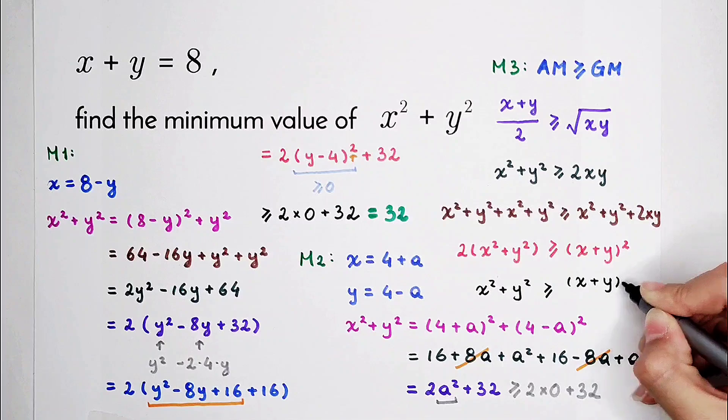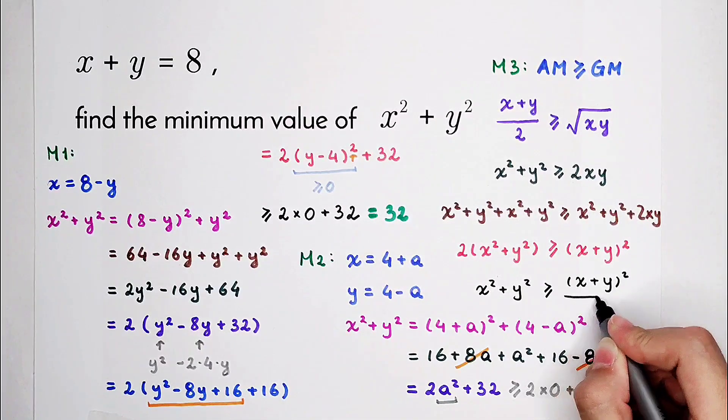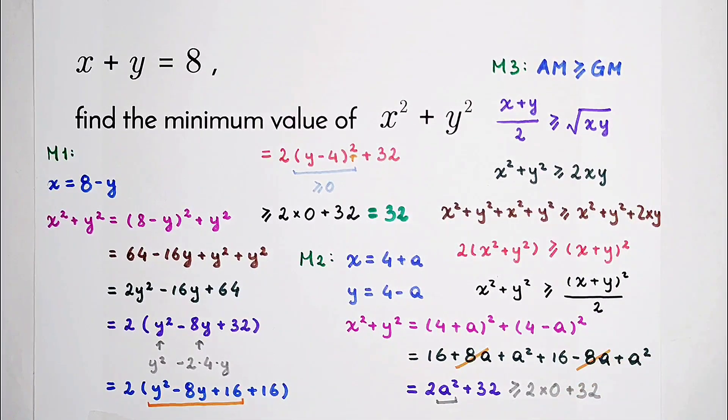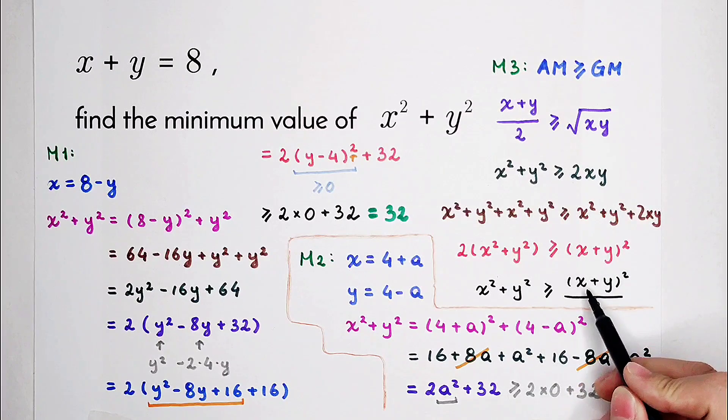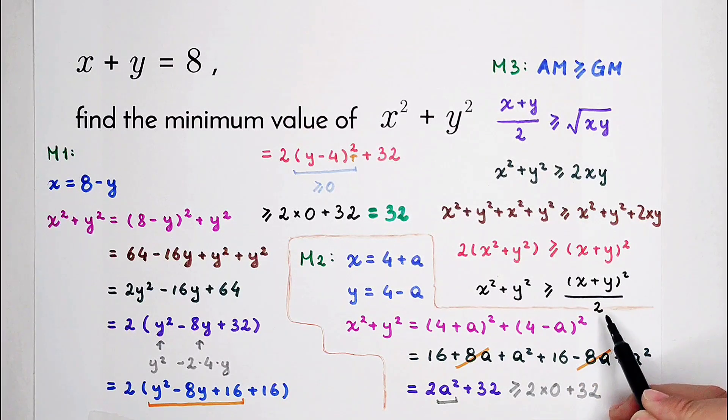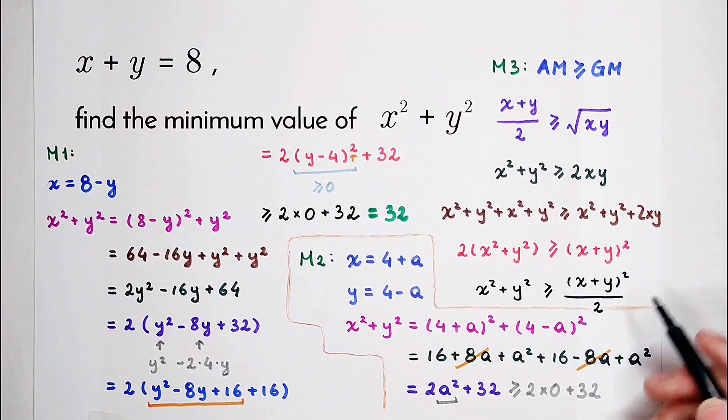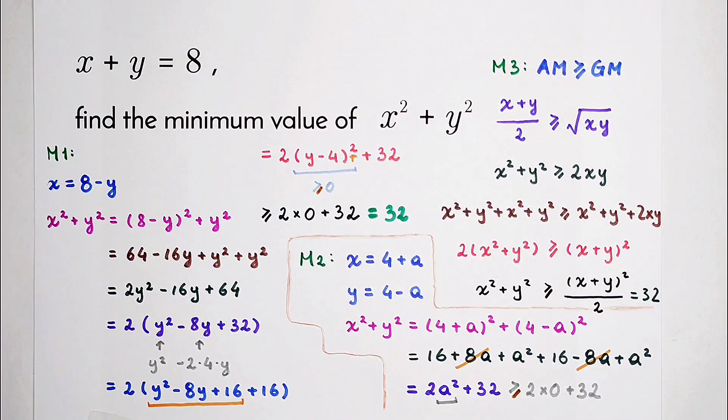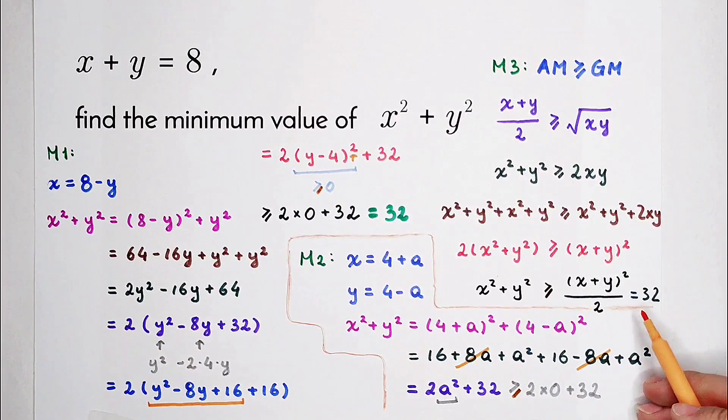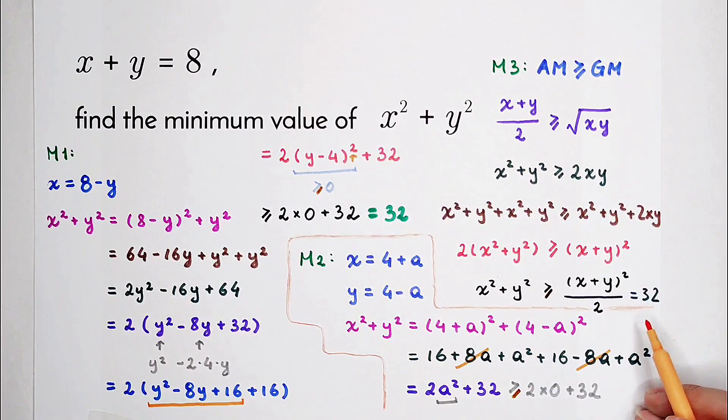So the final step is x squared plus y squared is greater than or equal to x plus y all squared divided by 2. So that's the formula. That means x squared plus y squared is greater than or equal to 8 squared divided by 2, that is exactly 32. And its minimum value is 32 when x equals y equals 4.